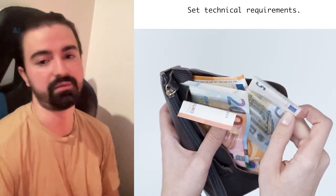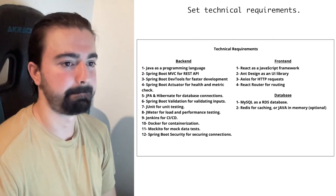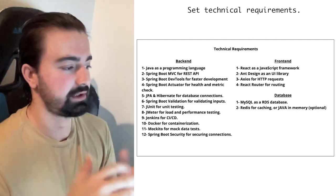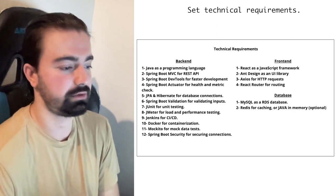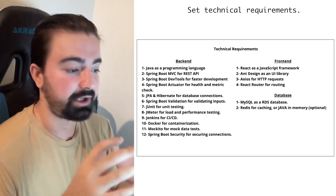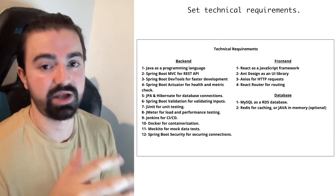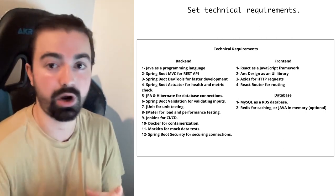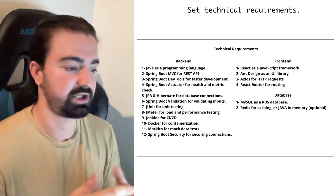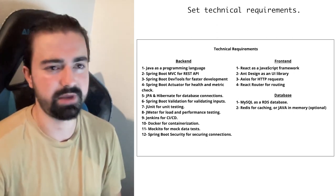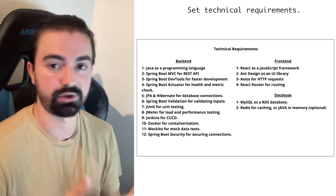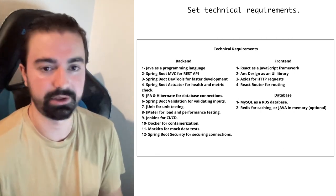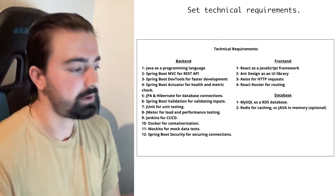I've already prepared technical requirements separated into three parts: backend, frontend, and database. For the database, I'll choose MySQL as a relational database system. There's also going to be a caching system — I don't want users to always wait for book searches. I'll use Redis ElastiCache from AWS. During the development process, to avoid spending money, I can use Java's in-memory cache system for the API endpoints.